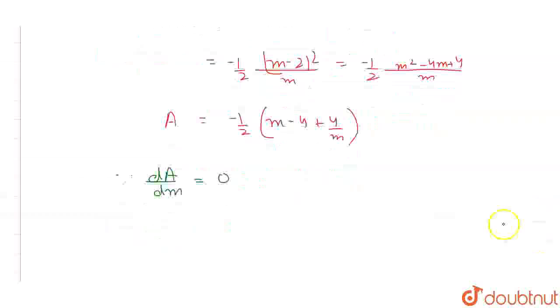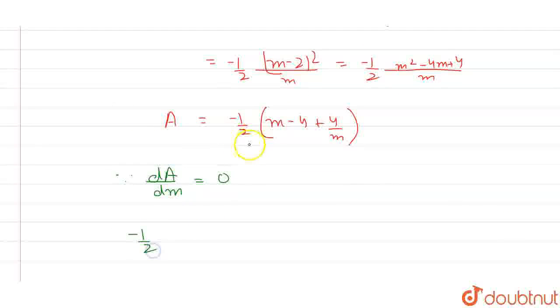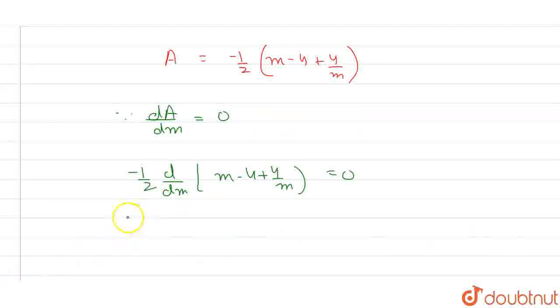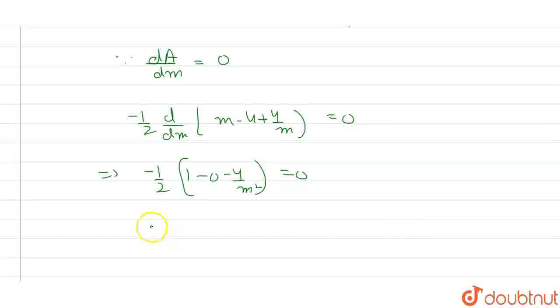So dA/dm will become minus 1/2. I'll write it here first, step by step we will go, m minus 4 plus 4/m equals to 0. So this will become minus 1/2. This is 1, this is 0, and this is minus 4/m square. And this is also 0. So this will come out as 1 minus 4/m square equals 0.